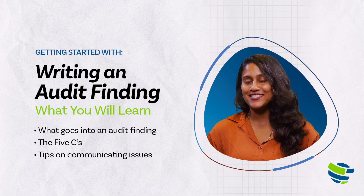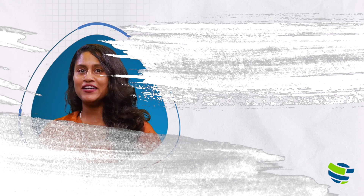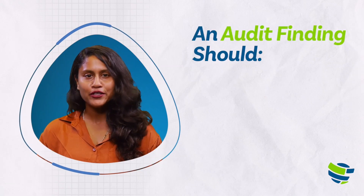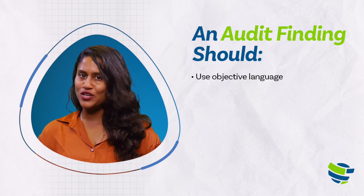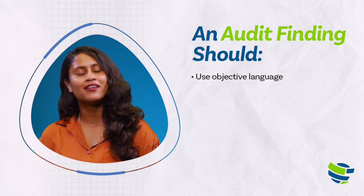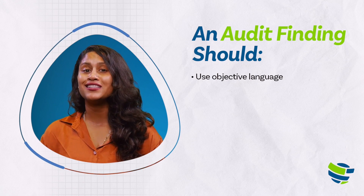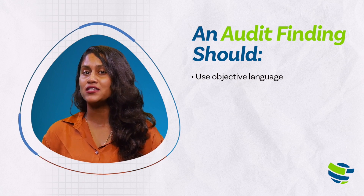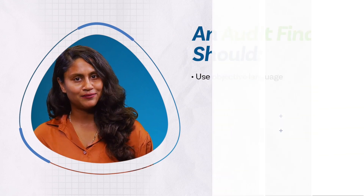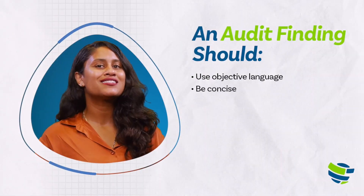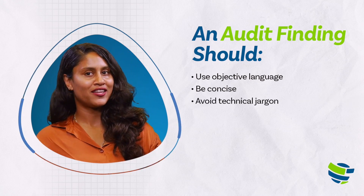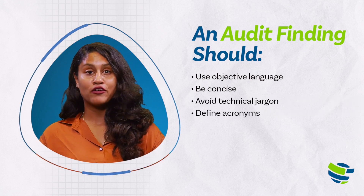So let's get started. You found an issue and now you need to communicate exactly what has gone wrong. Be sure to use objective language — this means writing that avoids emotion, exaggeration, and bias. Internal audit is an independent function that provides objective assurance, and this must be reflected in the audit finding. The audit finding should be concise and clear, using plain language and avoiding technical jargon.